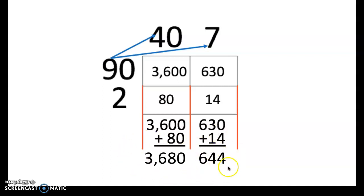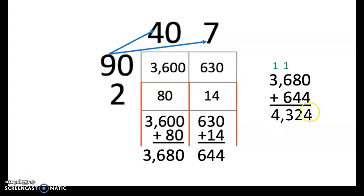Now, 3680 and 644 are not our final product. These are simply partial products. In order to get our answer, we need to neatly and in an organized manner add these last two partial products together to get our final product. Again, simply lining up our place values, our ones, tens, hundreds, and thousands.